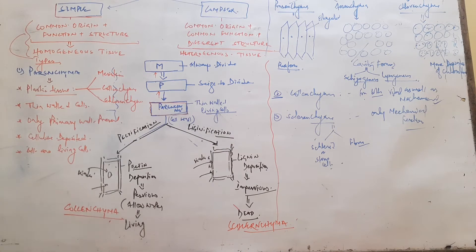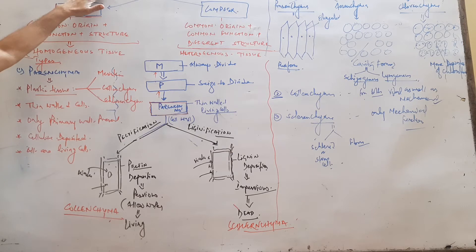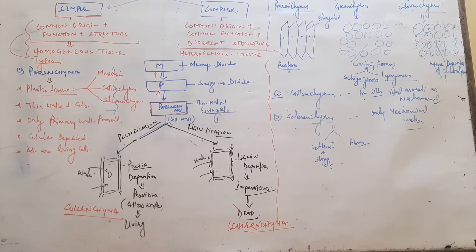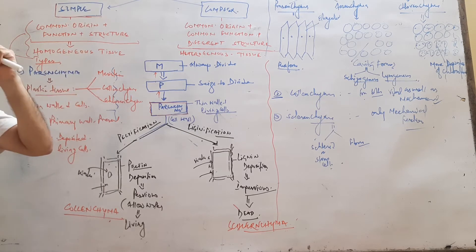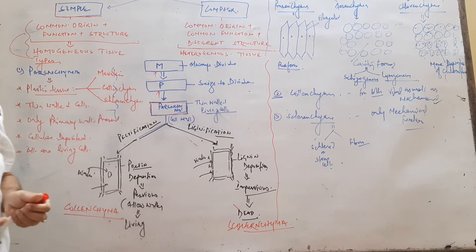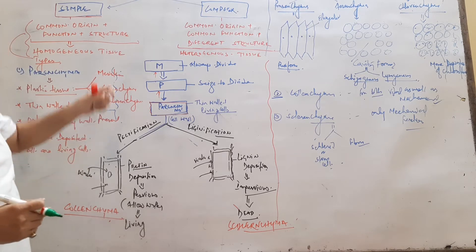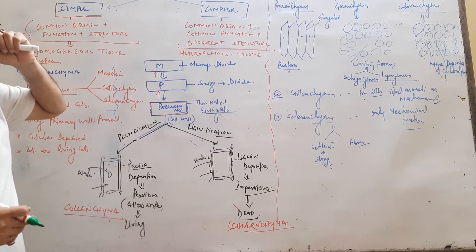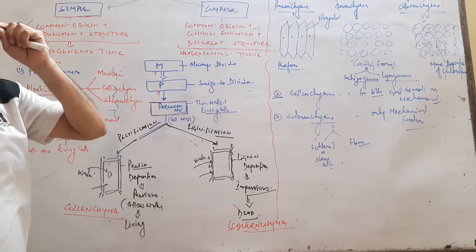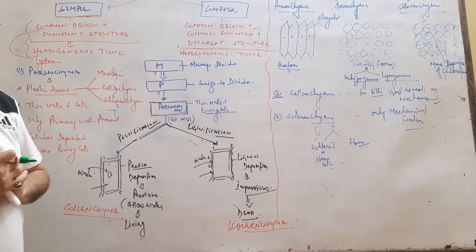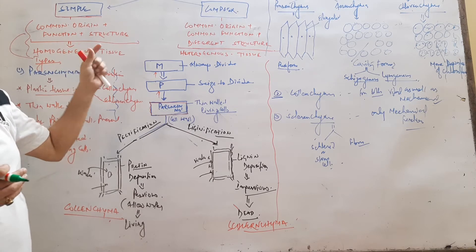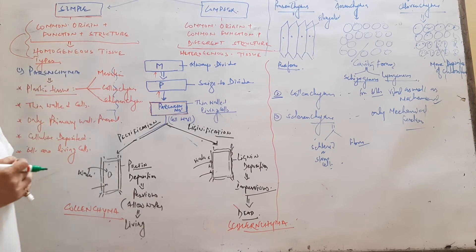Hello friend. Now we are going to start one of the permanent tissues. In the previous class we already discussed meristematic tissue. The characteristic features of meristematic tissue include continuous division, growth, and multiplication of cells. But in permanent tissue, cells cease to divide and become permanent tissue.